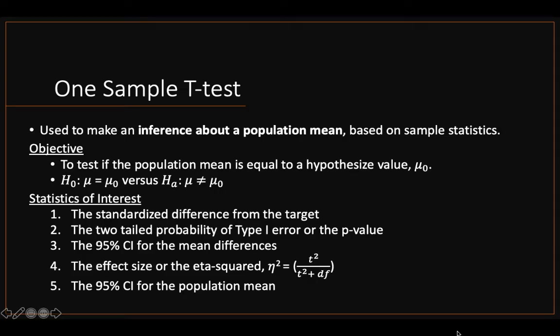It's a fairly simple test. It is only used to make an inference about a population mean based on our sample statistics. We have a sample and we compare it against a hypothesized value. So the objective is to test if the population mean is equal to a hypothesized value. You can see the hypothesis there: mean equals to mu-zero or hypothesized value versus mean does not equal to the hypothesized value.